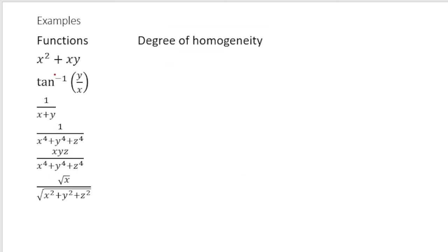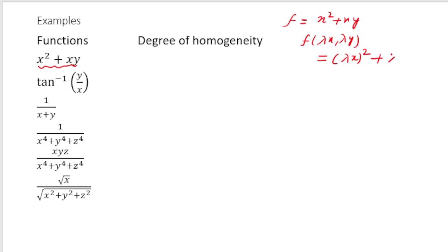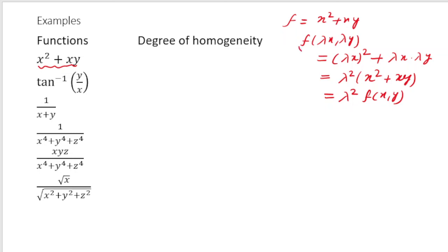Let's look at some examples. The first function is x² + xy. Computing f(λx, λy) gives (λx)² + (λx)(λy) = λ²(x² + xy) = λ² f(x, y). So this is a homogeneous function of degree 2.